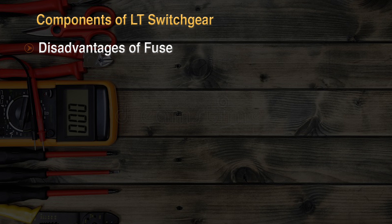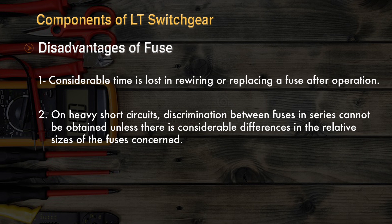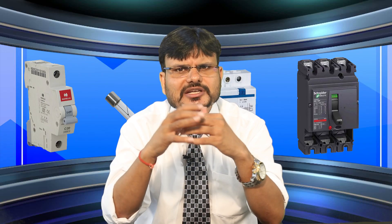The disadvantages of a fuse are: considerable time is lost in rewiring or replacing a fuse after operation; on heavy short circuit, discrimination between fuses in series cannot be obtained unless there is a considerable difference in the relative size of the fuses concerned; and the current-time characteristic of the fuse cannot always be correlated with that of the protective device.